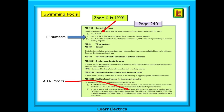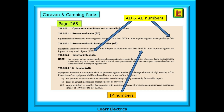Notice that on the swimming pool page there is also an AD code specified — AD 8, the same as IP X8. So the regs will sometimes use only IP codes, sometimes only AD or AE codes, and sometimes a mixture of both. Now look at caravan and camping parks on page 268 in particular. Again, the page has AD and AE references, and also quotes IP numbers.